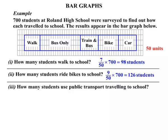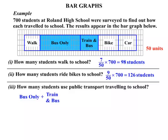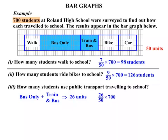How many students use public transport travelling to school? That's a combination of bus only and train and bus — some people catch the bus only, others catch train and bus. So bus only plus train and bus combined: we measure that and find there are 26 units across, so 26 out of 50 — a little more than half. We then multiply by the 700 students and we get 364 students.